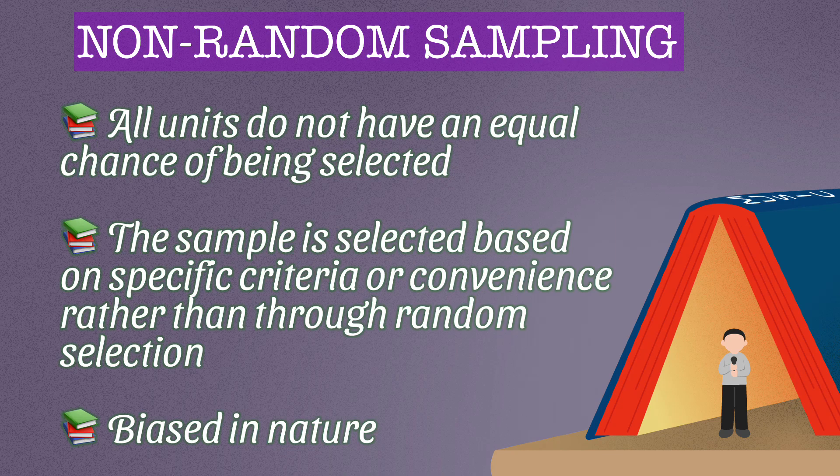In non-random sampling method, all units do not have an equal chance of being selected and the sample is selected based on some specific criteria or convenience rather than through random selection. In other words, non-random sampling is biased in nature.